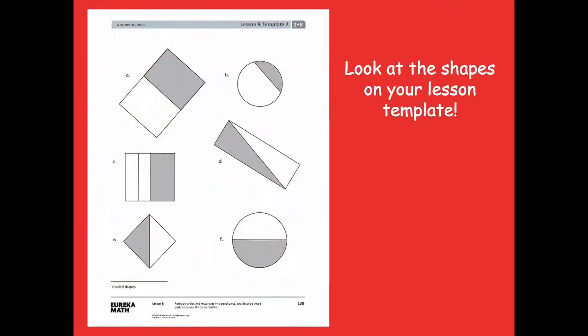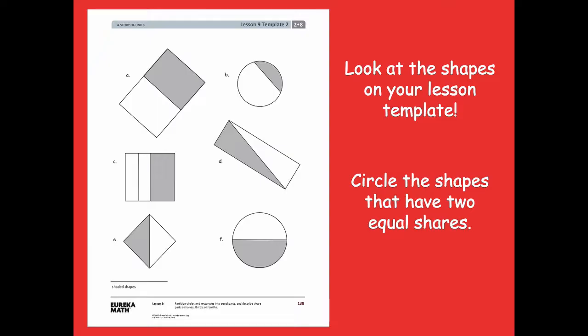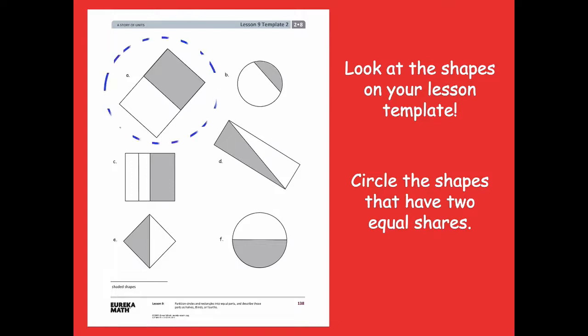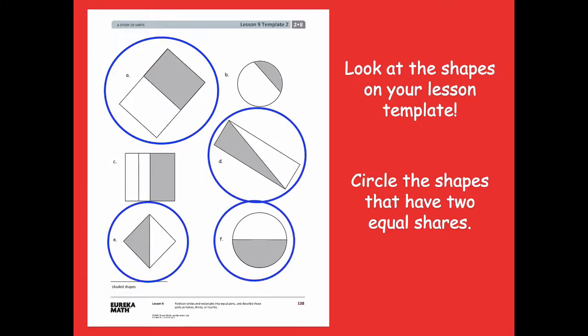Let's grab our lesson template. Look at the shapes on your lesson template — if you don't have it, you can look at the screen. I want you to circle the shapes that have two equal shares. You can also just point to the ones with equal shares. Pause the video, circle or point to the shapes with two equal shares, and then click play to go over it together. So shapes A, D, E, and F all have two equal parts or two equal shares.